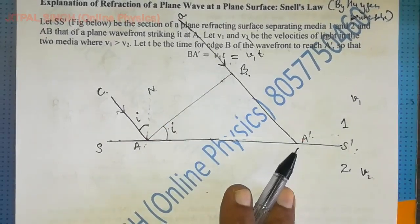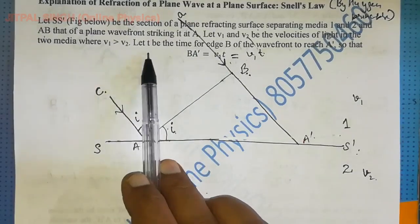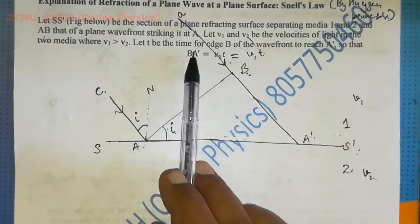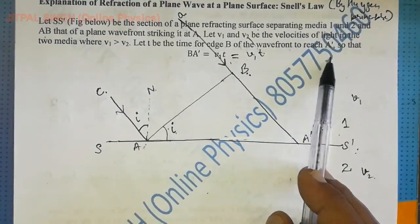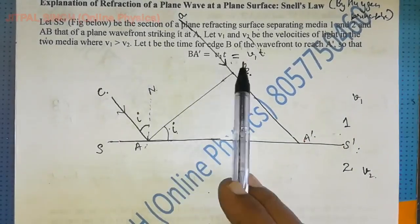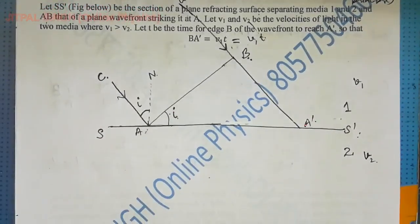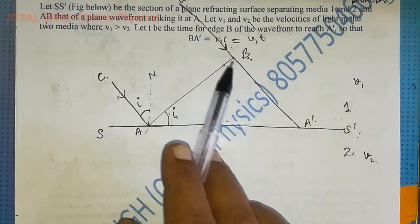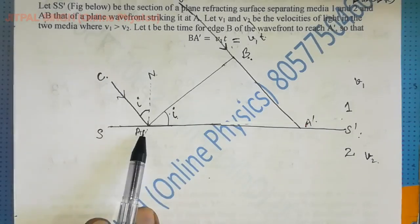Let t be the time taken by the wavelet from B to reach A'. Then BA' = v1 × t. Let t be the time for the edge B of the wavefront to reach A', so that BA' = v1 × t. In the same time — that is, the time in which the disturbance from B reaches A' — the disturbance from A grows into a sphere.